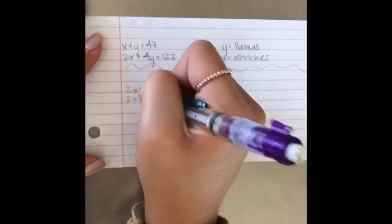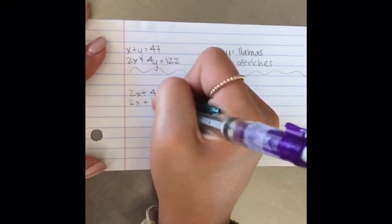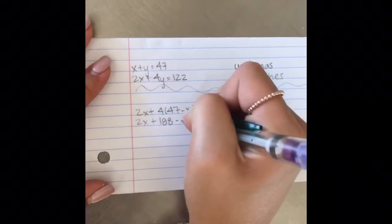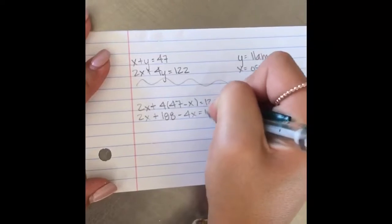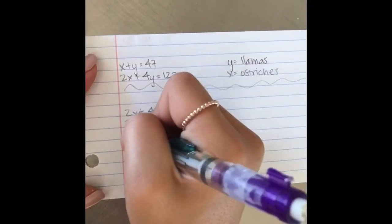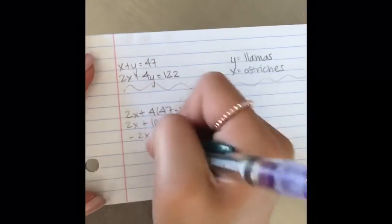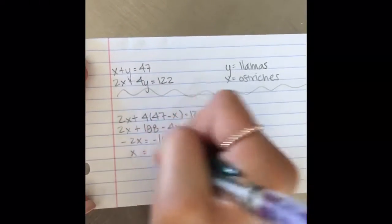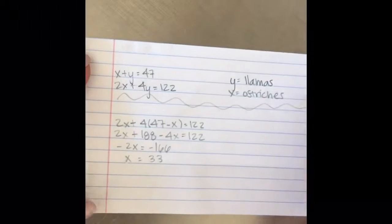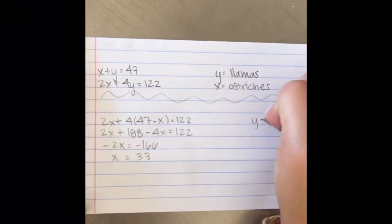Then, we used the distributive property to get 188 minus 4x. After that, we did 2 plus negative 4, which we got minus 2x, and then we did 188 minus 122, and we got negative 166.